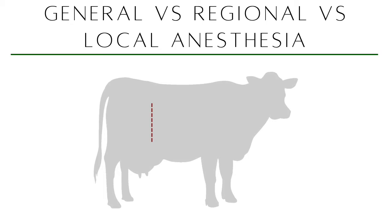However, in cattle or other large animals — including small ruminants and horses — you have to consider your choices. Remember when we discussed surgical judgment: there are a lot of factors to consider before conducting surgery, and this is a very important one. Starting with local anesthesia: you are rendering only the exact area where you will make the incision painless, so that area will not react to any pain or noxious stimuli.